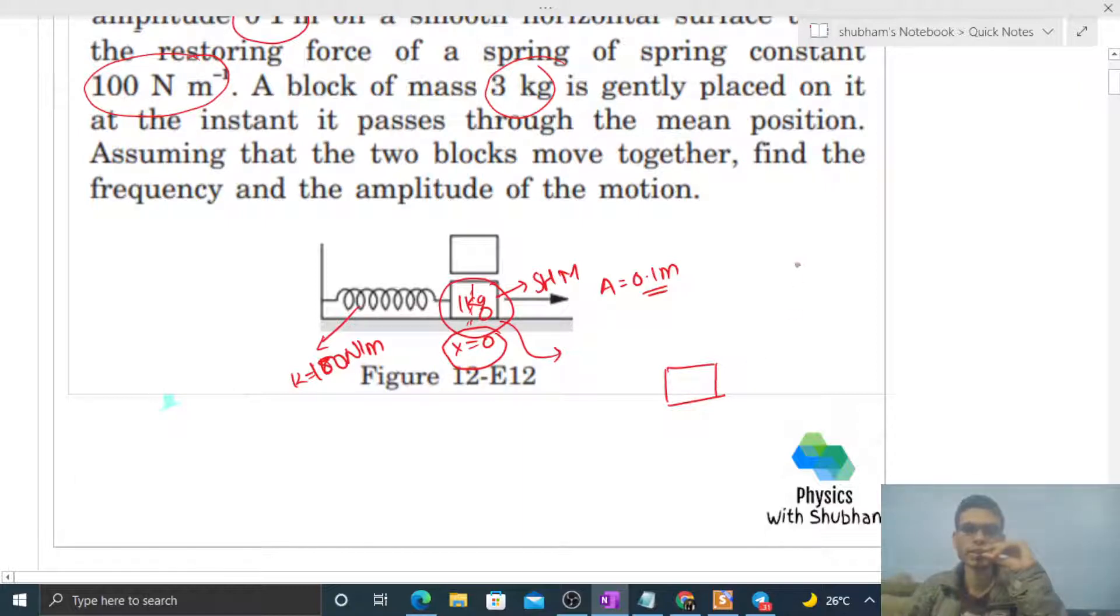At mean position, the speed will be maximum. How much speed? a times omega. In SHM, at mean position the speed is maximum and its magnitude is a times omega.